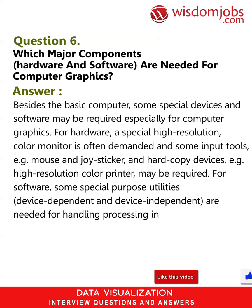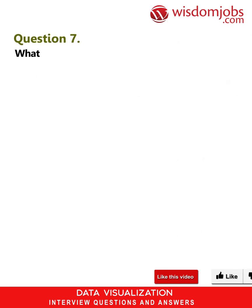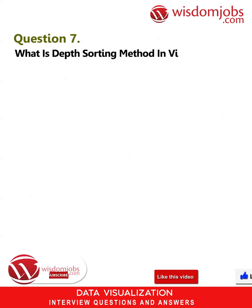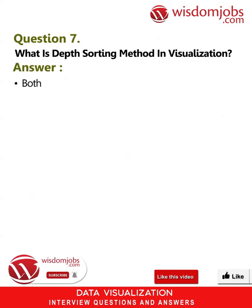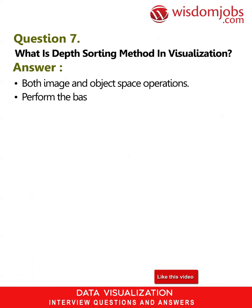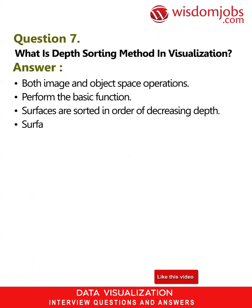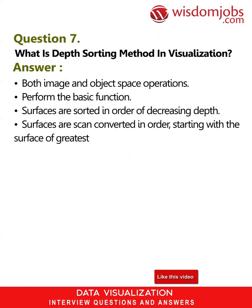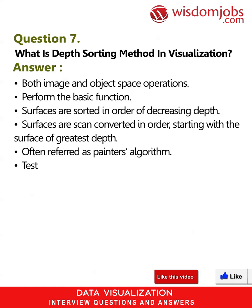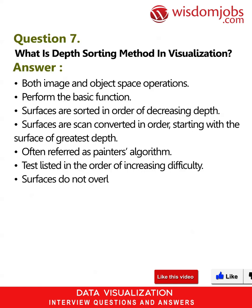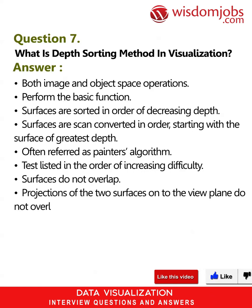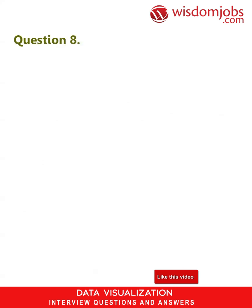Question 7: What is the depth sorting method in visualization? Answer: Both image and object space operations perform the basic function. Surfaces are sorted in order of decreasing depth and scan converted starting with the surface of greatest depth, often referred to as the painter's algorithm. Surfaces are listed in order of increasing processing difficulty. Projections of two surfaces onto the view plane may or may not overlap.